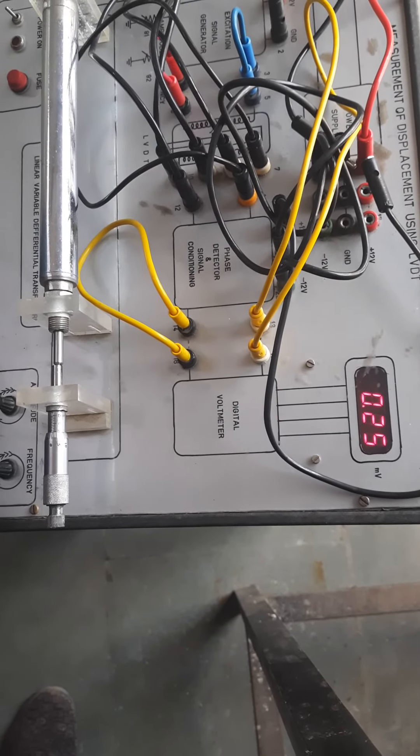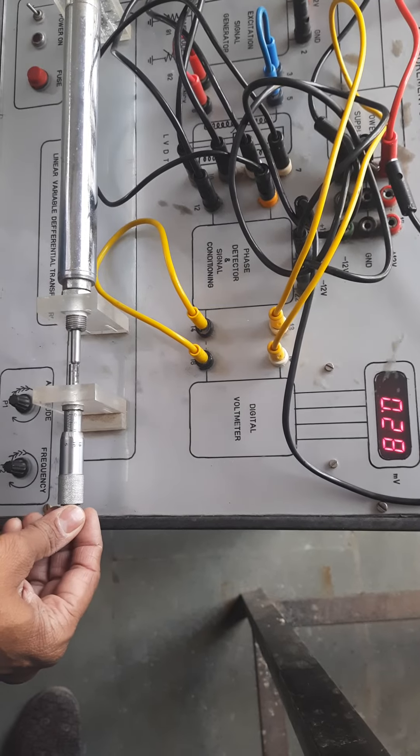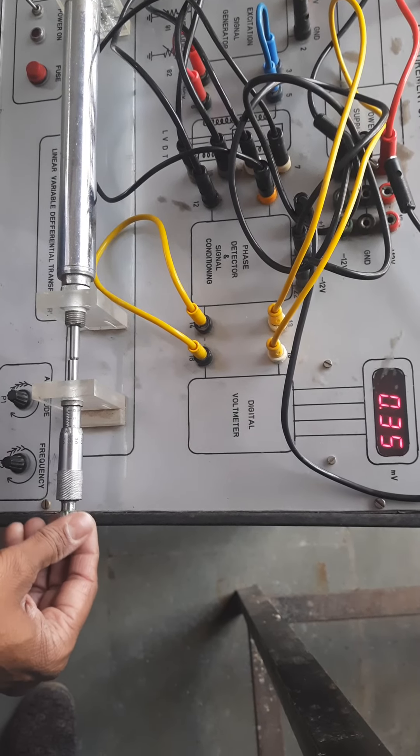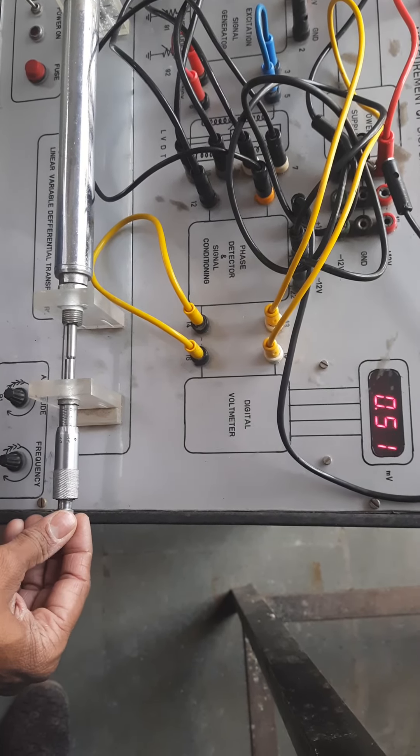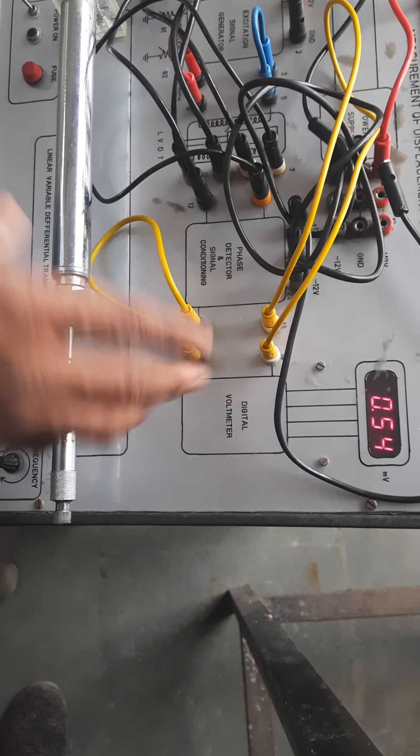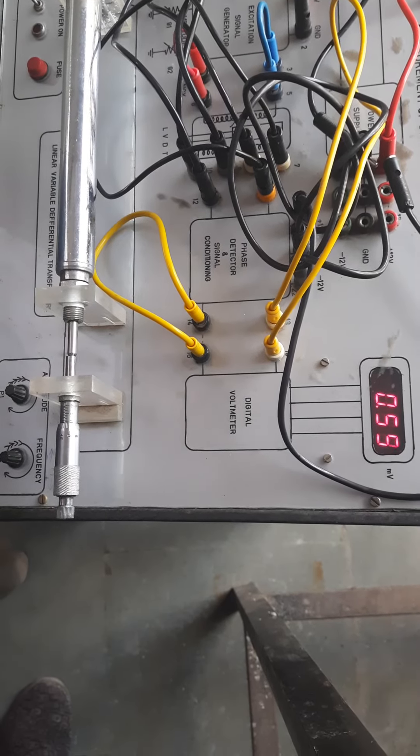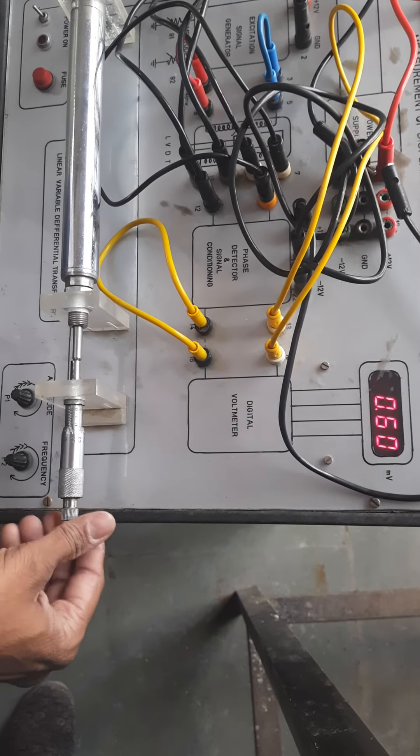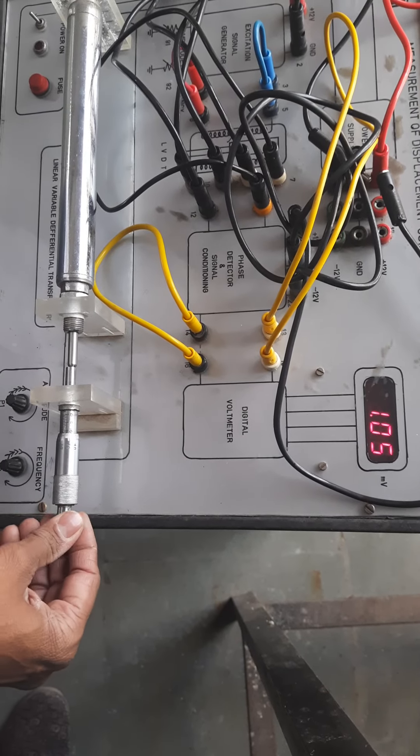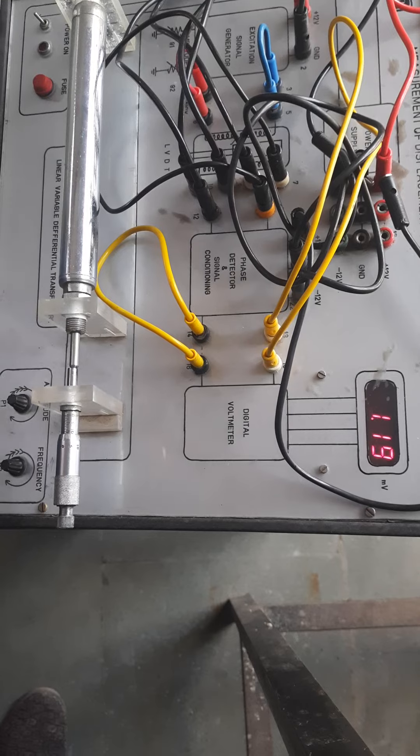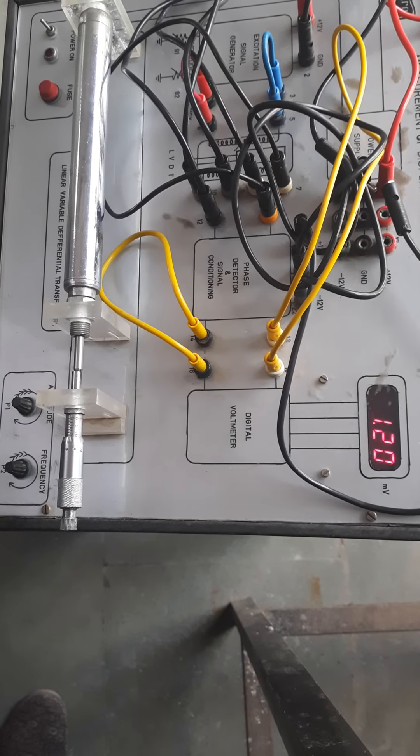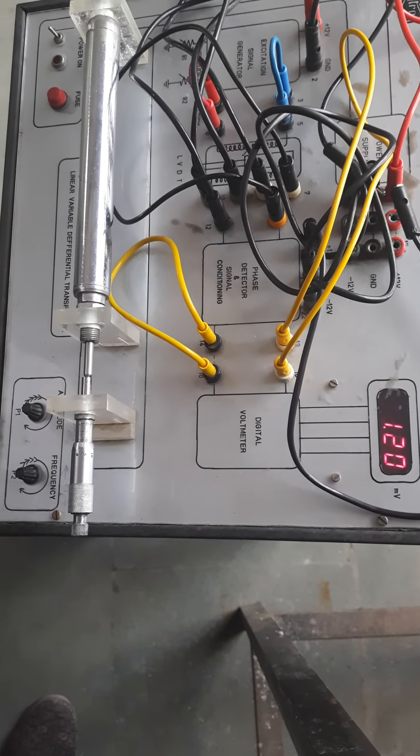11 is 0.25. Like that, linear variation you will observe. When you will go and move this further, this is almost, you can say, 12. So again, it is almost double, 0.54 millivolt. So on both sides, you can take the reading. So as told in the theory, LVDT can convert few displacement of few mm or few centimeter into millivolt. It is not for the higher measurement.